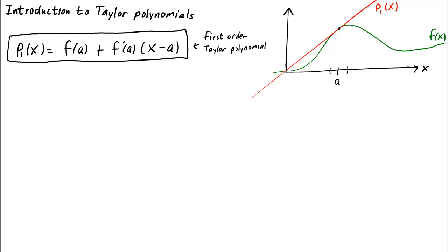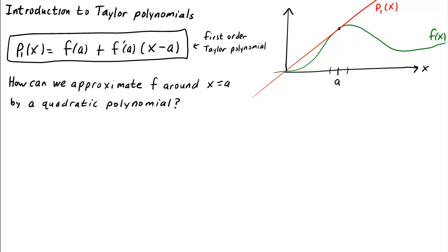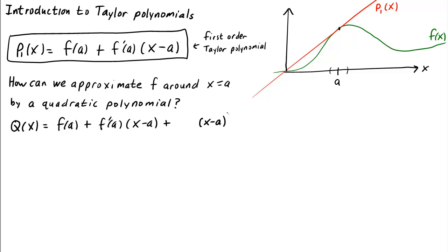f, on the other hand, curves downward here around x equals a. If we want to match this behavior of f, we can't use a linear function. A natural extension is to try a quadratic polynomial. So the question is: how can we use a quadratic polynomial to approximate the behavior of f around x equals a, and capture more of the behavior of f than we could with a linear approximation? Let's call this quadratic function q of x. We'll make the linear part just like the linear approximation: f of a plus f prime of a times x minus a, but now let's add a quadratic term, c times x minus a squared. The question is: what should the coefficient c be?